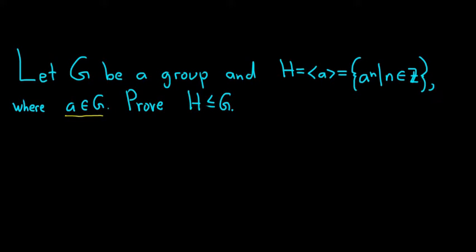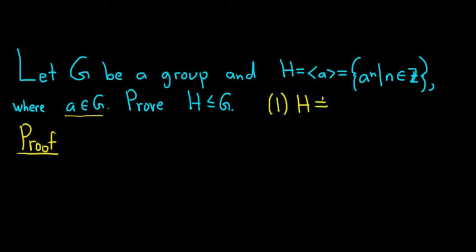We're going to prove that H is a subgroup of G. In order to do this proof, we have to satisfy the subgroup criteria. There are three things that H has to satisfy in order to be a subgroup of G. The first condition is that H is a non-empty set — it cannot be empty; it must contain something.